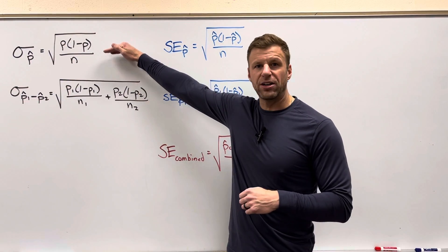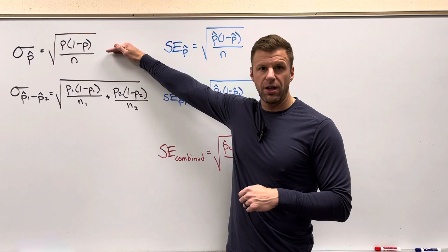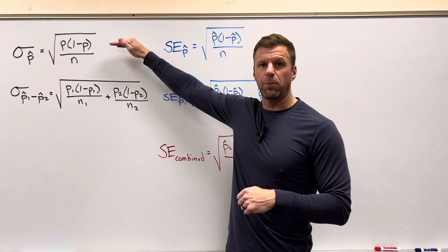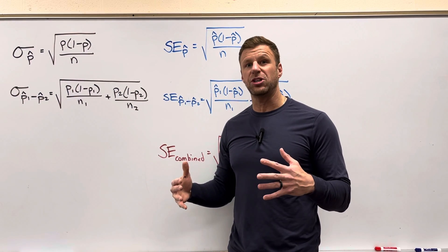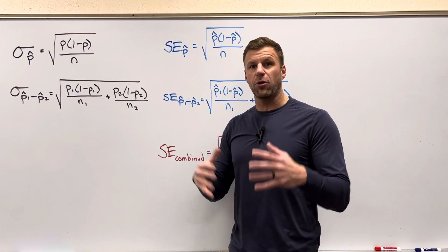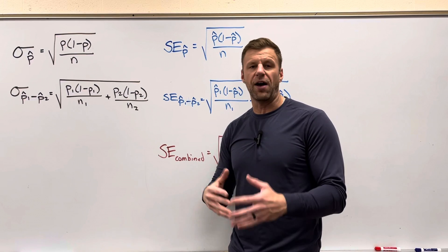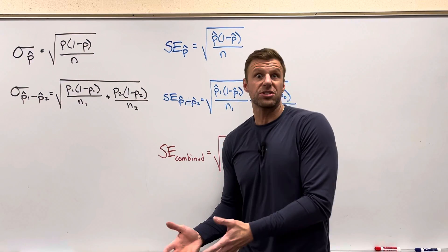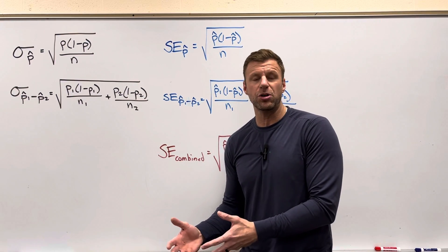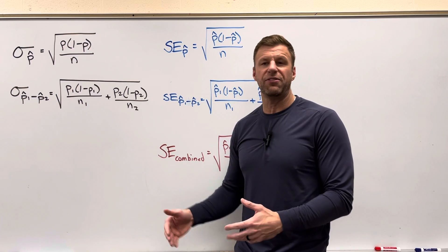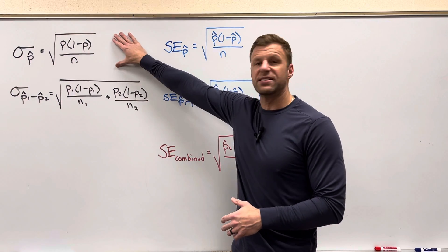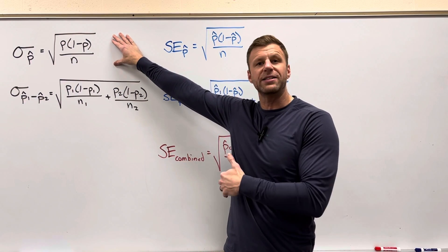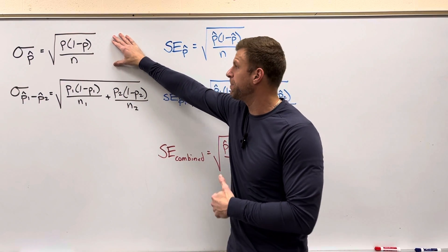This right here is the standard deviation for a sampling distribution of sample proportions. When you build a sampling distribution for sample proportions of the same sample size taken from the same population, there are tons of sample proportions, so they're definitely going to vary. This is the standard deviation for all of those different sample proportions — it explains how they're going to vary.